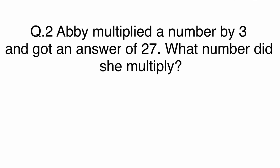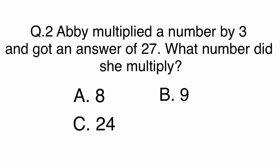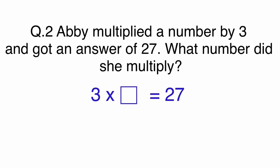Question 2. Abby multiplied a number by 3 and got an answer of 27. What number did she multiply? A. 8. B. 9. C. 24. Or D. 30. In this question, 3 times 9 equals 27. Or you can do 27 divided by 3 to get 9.